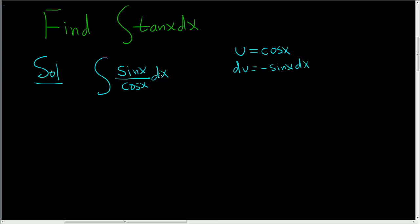We almost have what we want. Here we have sine x dx. Here we have a negative. So we'll multiply by negative 1 so that everything matches.